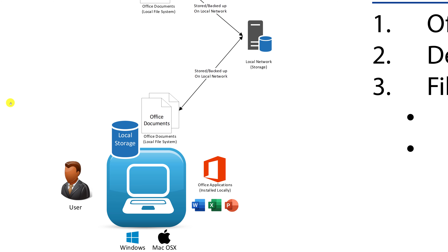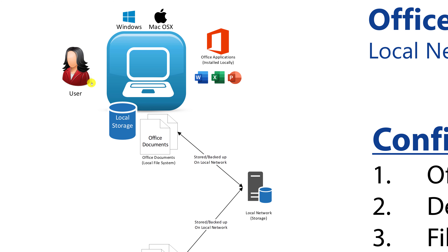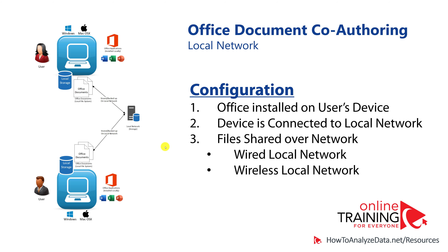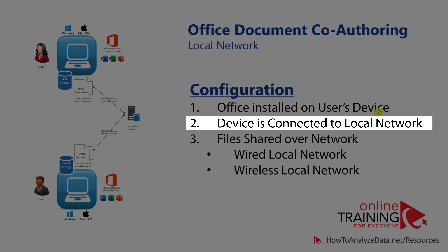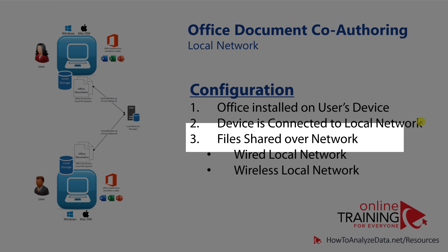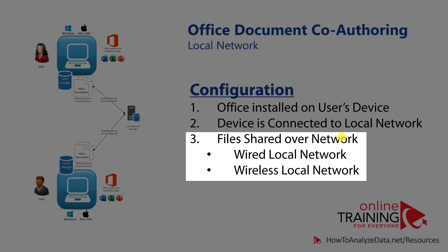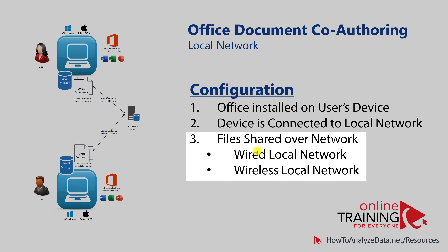In this local network model, one user would create or edit documents, put them on a shared local drive, notify another user, and that second user — using a similar desktop-based configuration — would edit, review the changes, and provide suggestions. This was a great innovation at the time, but the configuration required Office to be installed on the user's device, the device to be connected to the local network, and files shared over either a wired or wireless local network.